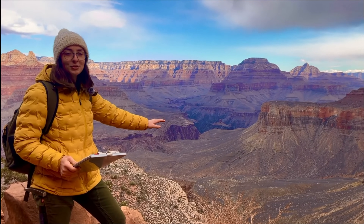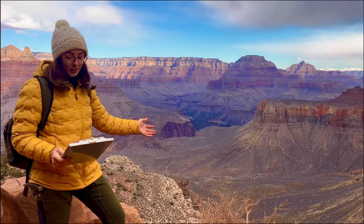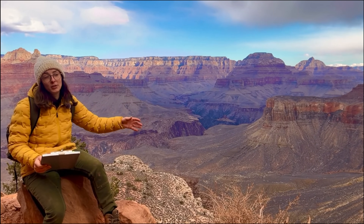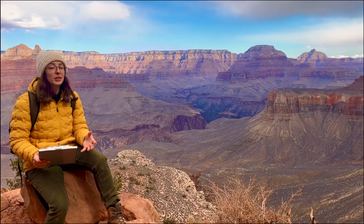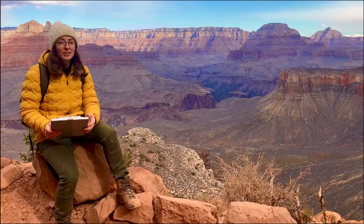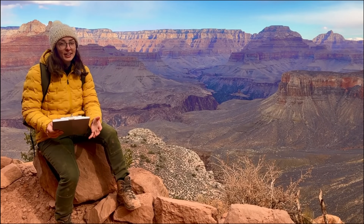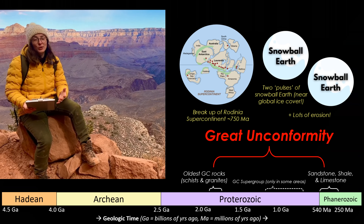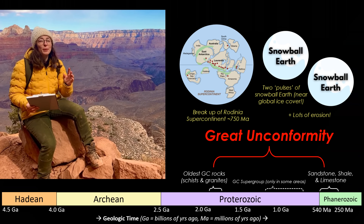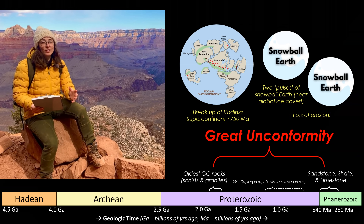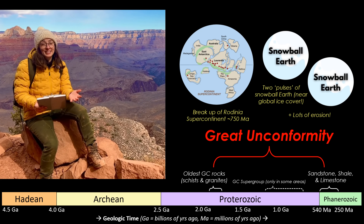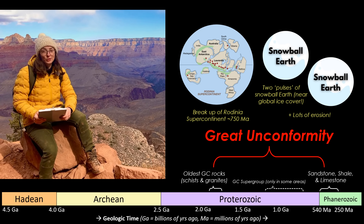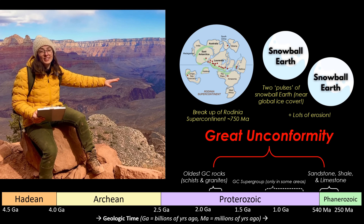What caused the Great Unconformity to form? The timing of this gap coincides with significant tectonic and climatic events, such as the breakup of the supercontinent Rodinia around 750 million years ago, and the subsequent Snowball Earth event, or near-global ice age. There were two big glacial periods during this Snowball Earth time, during which extensive erosion stripped away vast portions of Earth's crust, likely contributing to this great unconformity.